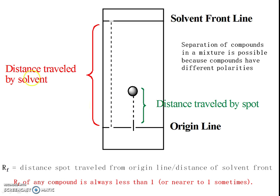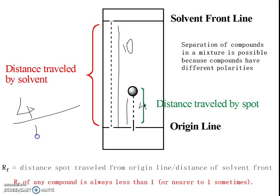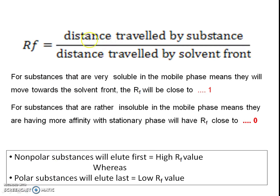In thin layer chromatography, evaluation is based on the calculation of the RF value. RF value is calculated as the distance travelled by the substance divided by the distance travelled by the solvent front. For example, if the compound travels 4 cm and the solvent travels 10 cm, the RF value is 0.4 — and it is unitless. The compound always travels less than the solvent front, so the RF value is always less than 1.